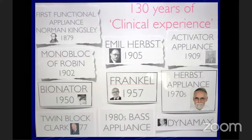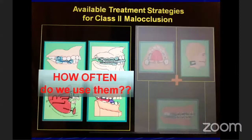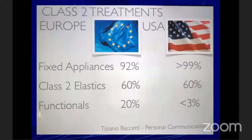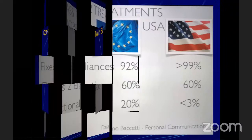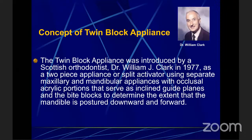There are 130 years of clinical experience with the evolution from Norman Kingsley to Monoblock, Emil Herbst, Activator, Bionator, Fränkel, Herbst, and Twin Block. How often do clinicians use functional appliances? In the United States and Europe, the functional appliance is used in less than 3% of cases in the USA and almost 20% in Europe.